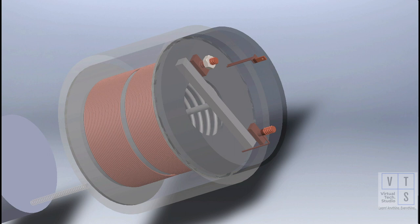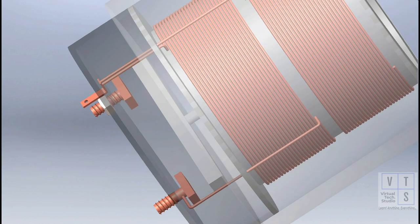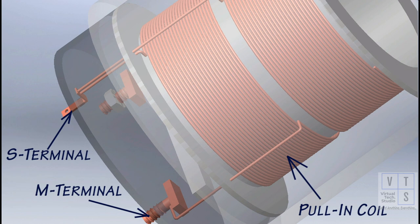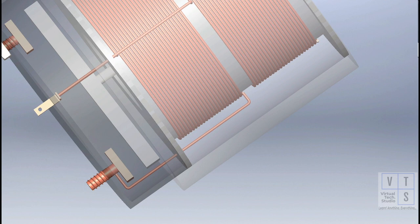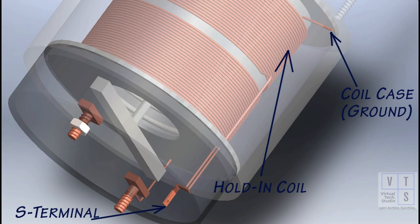There are two coils inside the magnetic switch: the pull-in and the hold-in coil. The pull-in coil connects between the S and M terminals. The hold-in coil connects between S terminal and ground through coil case.